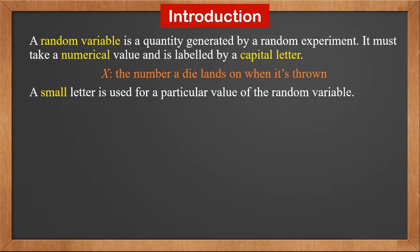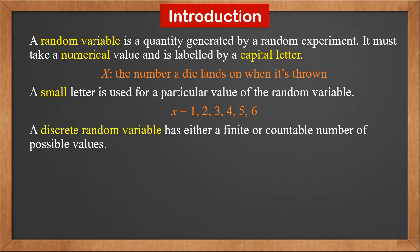A small letter is used for a particular value of the random variable. For example, little x can be 1, 2, 3, 4, 5, or 6. A discrete random variable has either a finite or countable number of possible values. X can have only 6 values, so it is a discrete random variable.